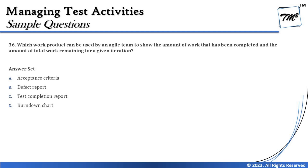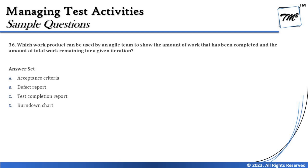The options are: A - Acceptance Criteria, B - Defect Report, C - Test Completion Report, and D - Burndown Chart. To recap, acceptance criteria defines when a particular story is done, so it's not about how testing is going on, what has been completed so far, or how testing has covered the required application. The question is asking about how much testing has been completed and what is remaining to be done.